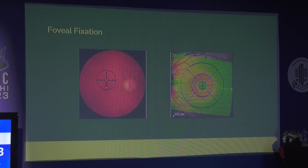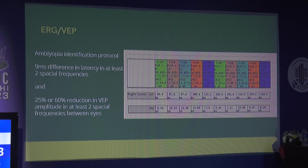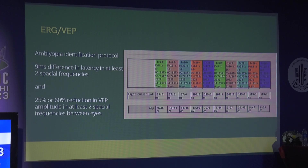Diopsys is another supplementary tool to assess visual pathways, prognosis, and follow-up. The amblyopia identification protocol using ERGs and VEPs requires a 9-millisecond difference in latency in at least two of five spatial frequencies between the eyes, with different target sizes and contrast levels. There should also be a 25 percent or 60 percent reduction in amplitude for severe amblyopes to be graded as amblyopic.